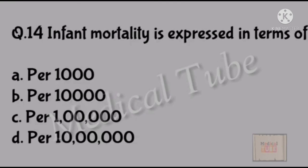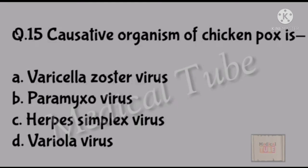Fourteen number question: Infant mortality is expressed in terms of? Correct answer is A: per 1000. Fifteen number question: Causative organism of chickenpox is? Correct answer is A: Varicella zoster virus.